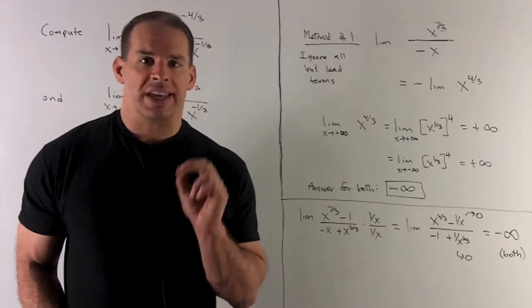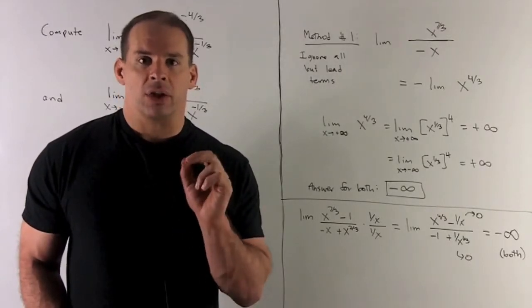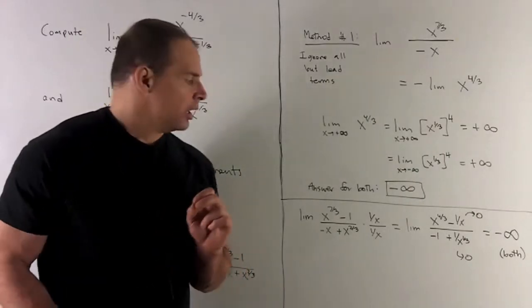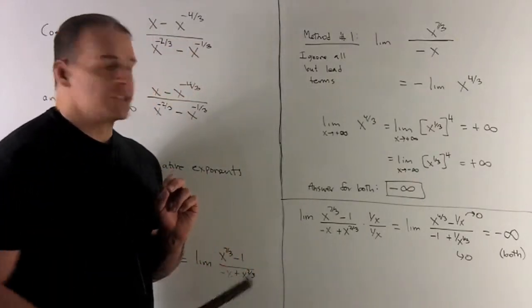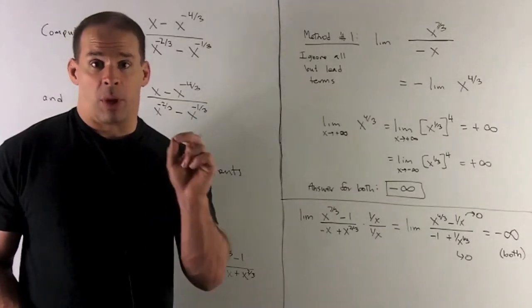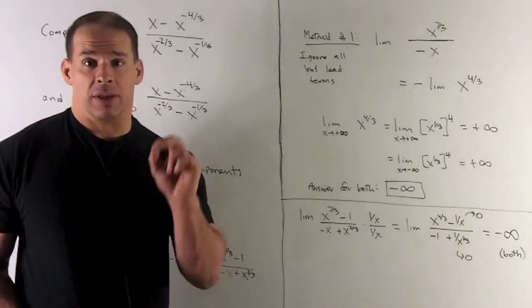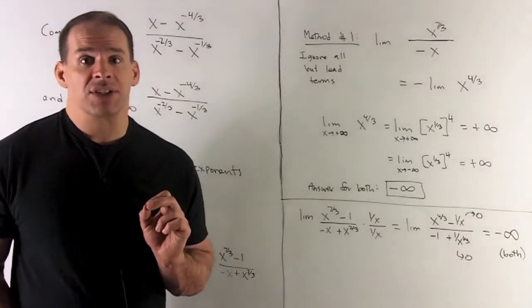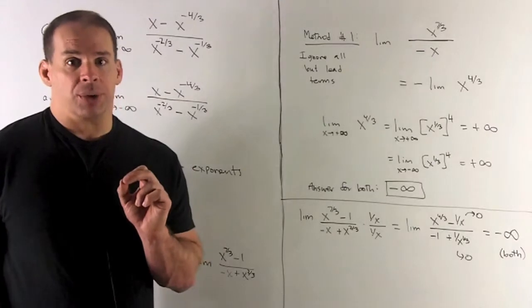So how do we do this the careful way? Let's take a look at the lead terms in the numerator and the denominator. Here, 7 thirds is bigger than 1, so I'm going to divide by the smaller of the 2. We'll divide by x in the numerator and denominator, same as multiplying by 1 over x.